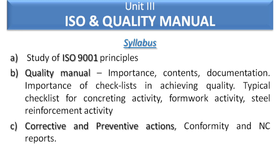Unit number 3 has the heading ISO and Quality Manual. Its contents are divided in three categories. Category A consists of the study of ISO 9001 principles. Category B covers Quality Manual — its importance, contents, documentation, and the importance of checklists in achieving quality, covering concreting activity, formwork activity, and steel reinforcement activity. Category C covers corrective and preventive actions, including conformity and non-conformity reports.